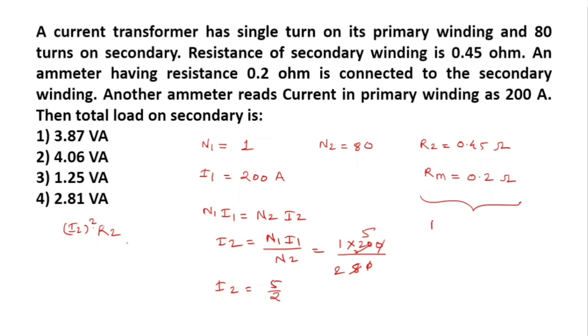Total resistance RT equals 0.65 ohm. I2 squared value is 5 by 2 whole square into RT 0.65, so 25 divided by 4 into 0.65 equals 4.06.